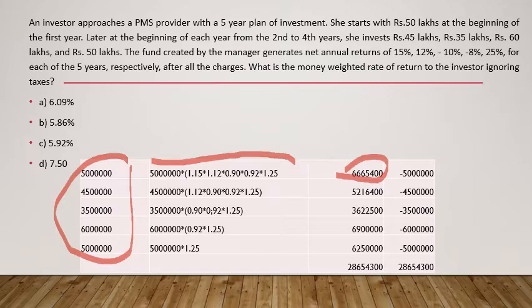For the second investment of 45 lakhs, we can only consider four years of returns, because this investment starts at the beginning of the second year. So the 15% return applied to the first investment is not considered here. Multiplying 45 lakhs with the subsequent four years of returns gives us the corresponding value.